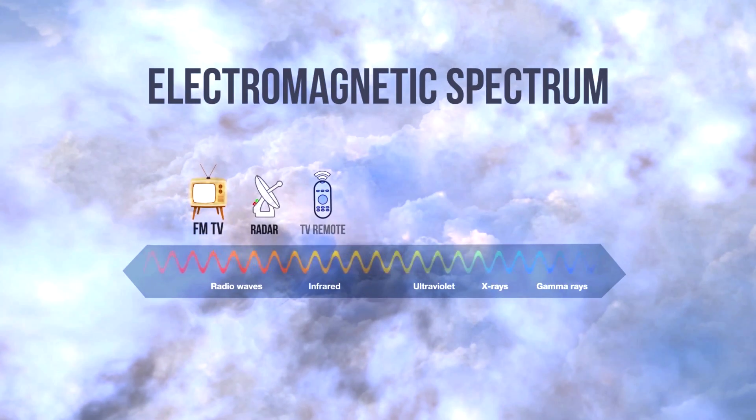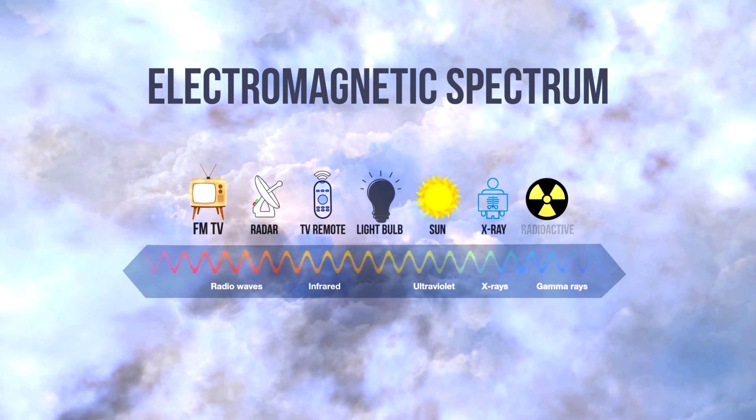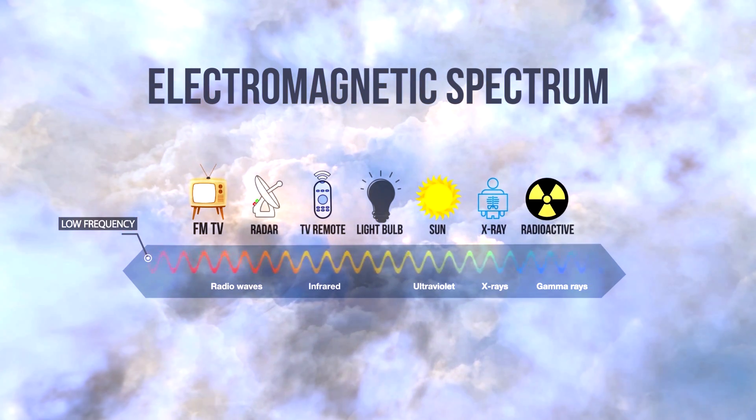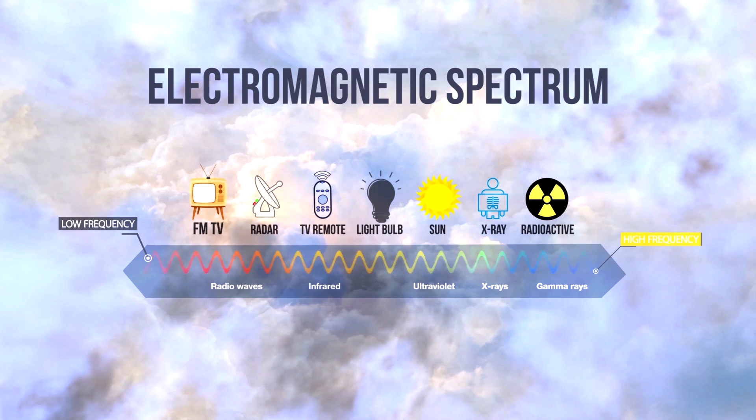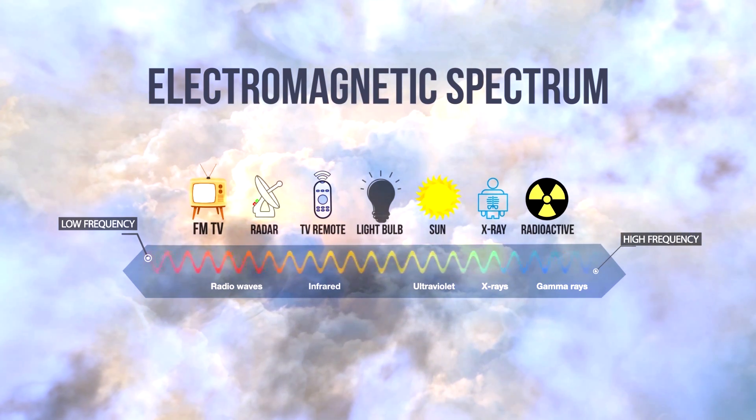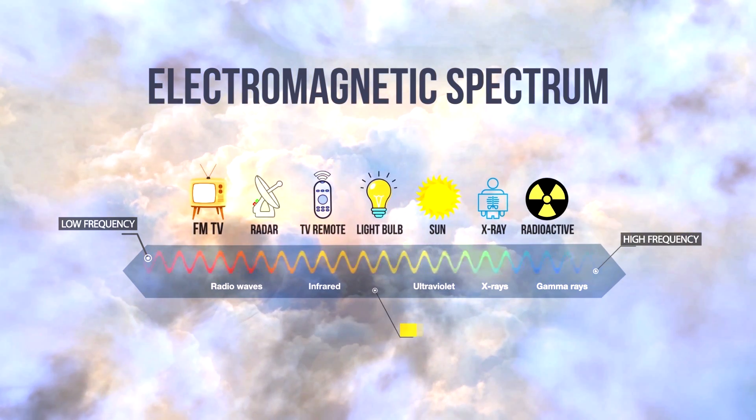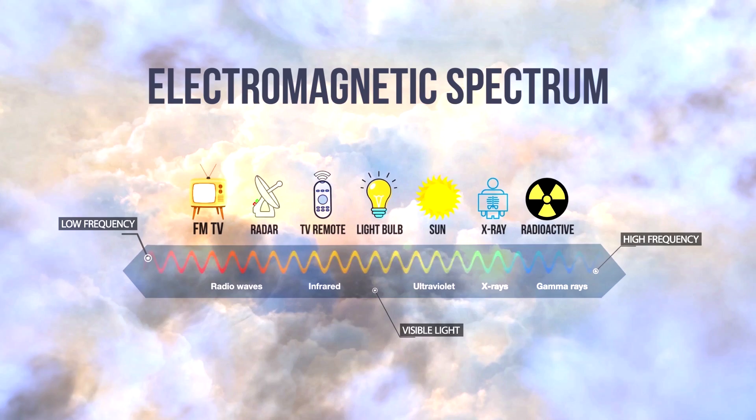Low-frequency light, like that given off by incandescent bulbs, looks more yellow or red. Higher-frequency light, such as sunlight, looks bluer, but the human eye can only perceive a small range of these colors, and that's what we call visible light.